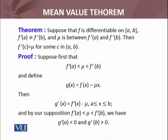Then g' equals f'(x) - μ for all x in [a, b]. By our supposition, f'(a) and f'(b) are such that g'(a) is less than zero and g'(b) is greater than zero. And g' is a differentiable function.